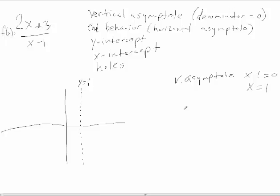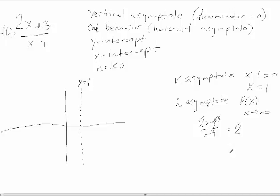For the horizontal asymptote, or end behavior, we see what happens to f(x) as x goes to infinity. The plus 3 and minus 1 become relatively meaningless, and the ratio goes to 2x over x, which is 2. Another way to think about this: since the degree on top and bottom are the same, the asymptote is the ratio of the leading coefficients, which is 2 over 1. So we have the horizontal asymptote y = 2.